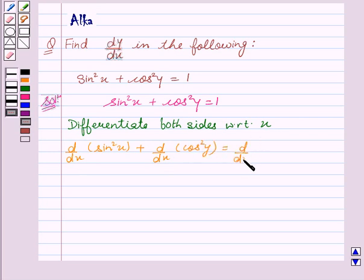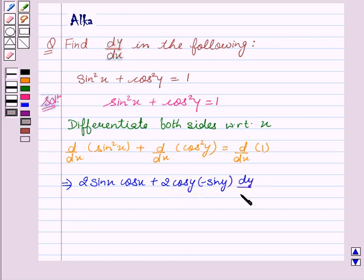This implies d by dx of sin square x is 2 sin x cos x plus d by dx of cos square y is 2 cos y into minus sin y into dy by dx equal to 0. Since the derivative of a constant is 0.